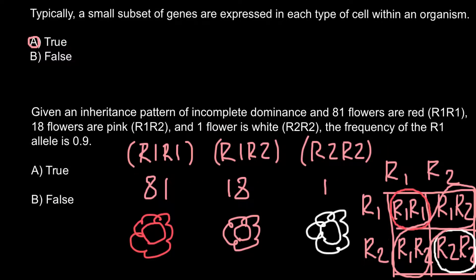We have three genotypes and two types of alleles: R1 and R2. Now we just have to count how many R1 alleles and how many R2 alleles we have. In this example, we have 81 plants, and each plant has two R1 alleles.